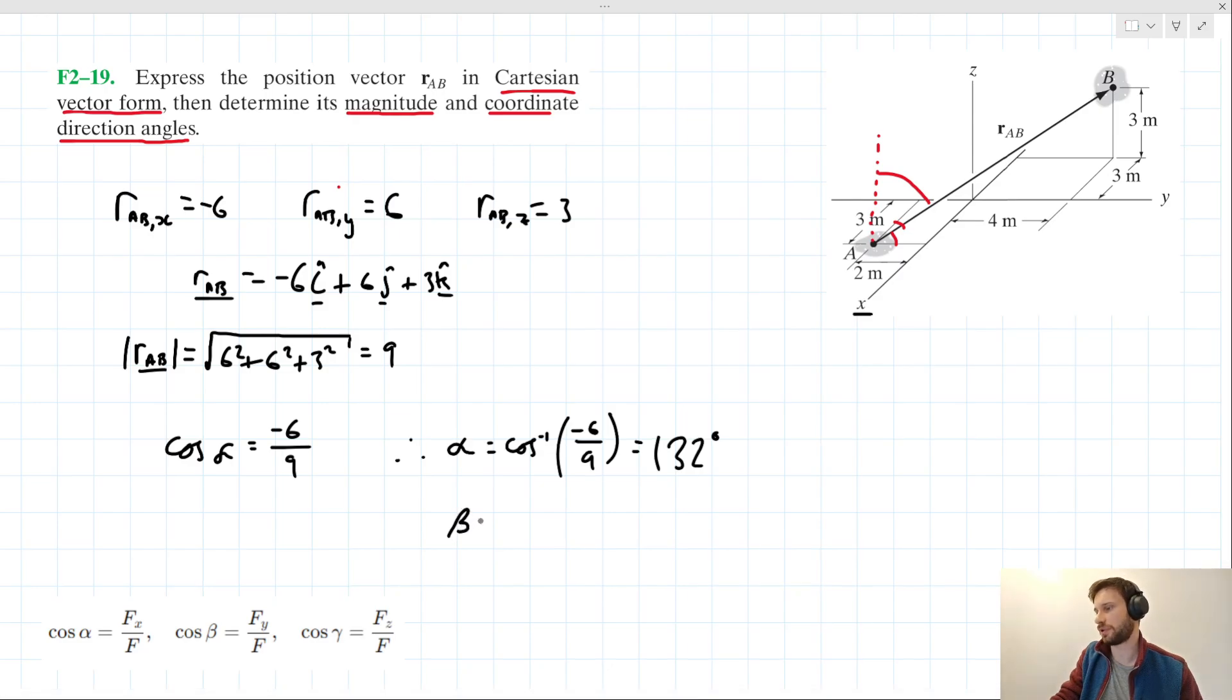Using the exact same process, we can say β in this instance equals cos⁻¹(6/9), which when we put in our calculator gives us a value of 48.2 degrees.